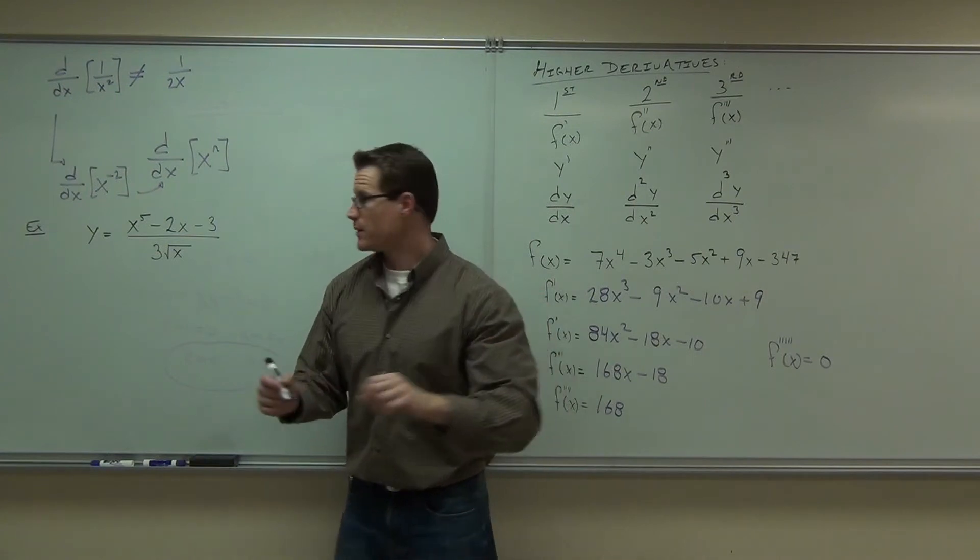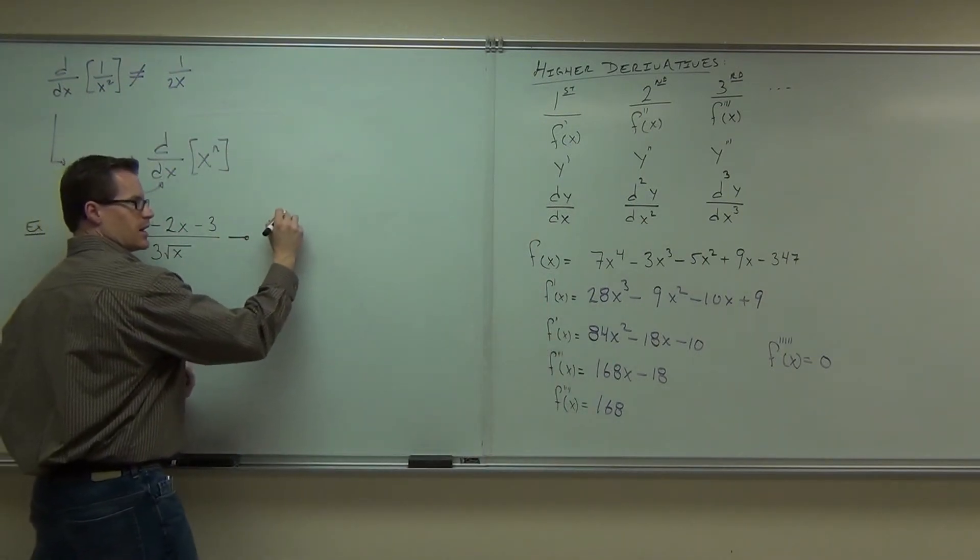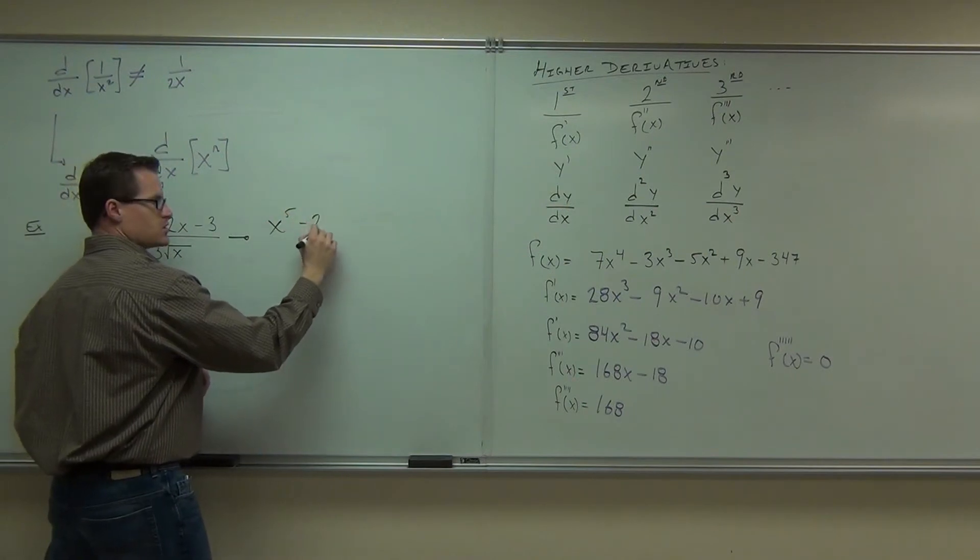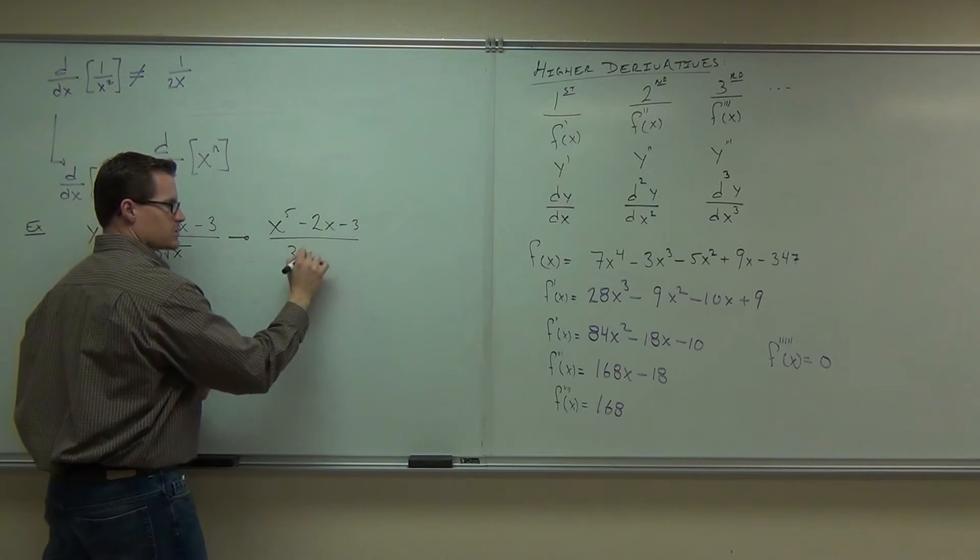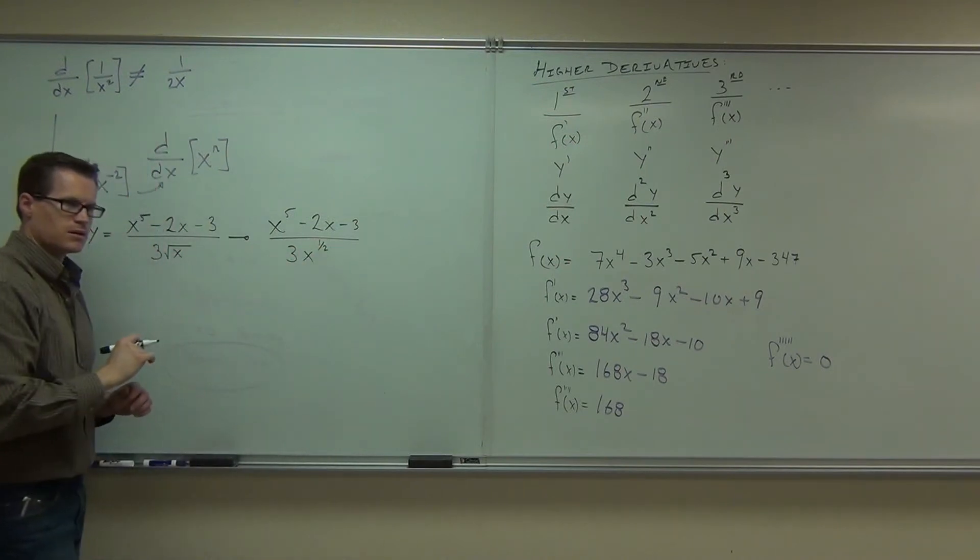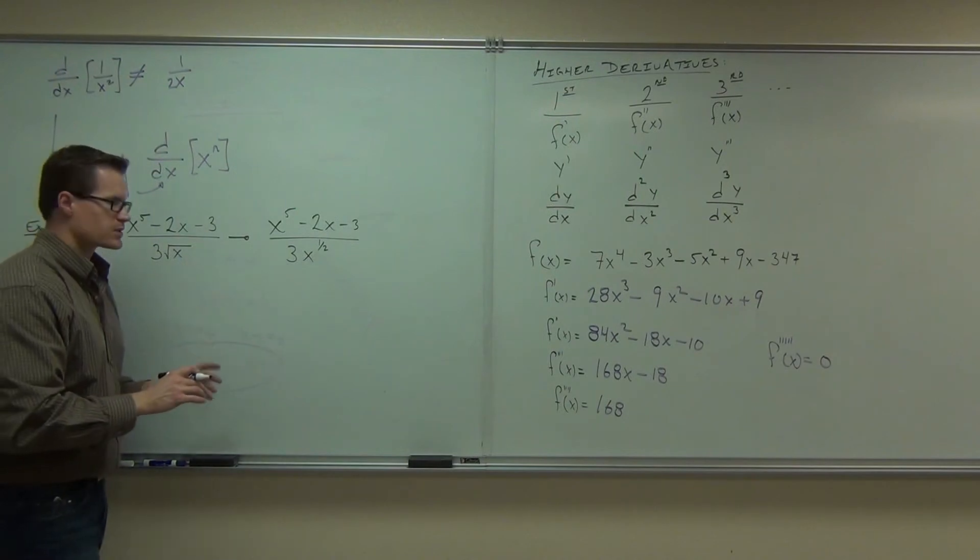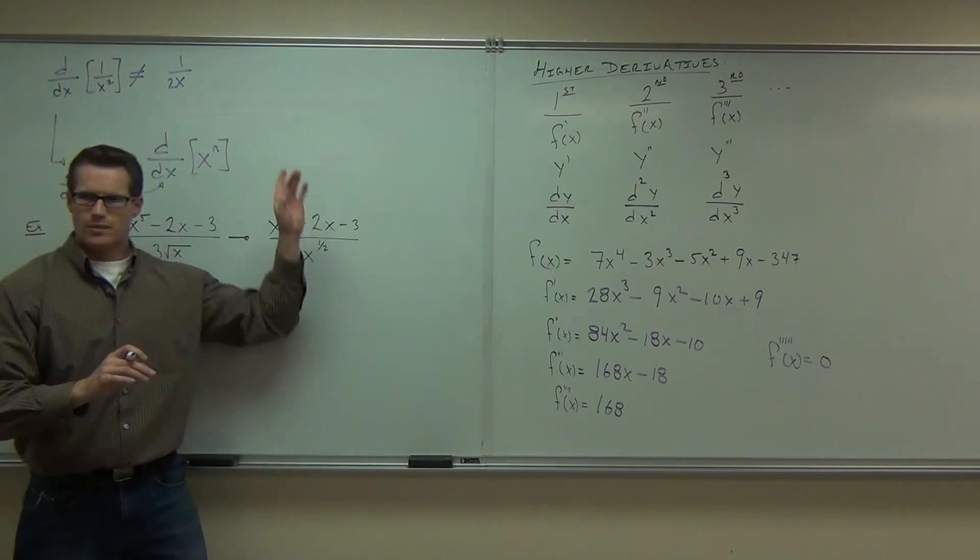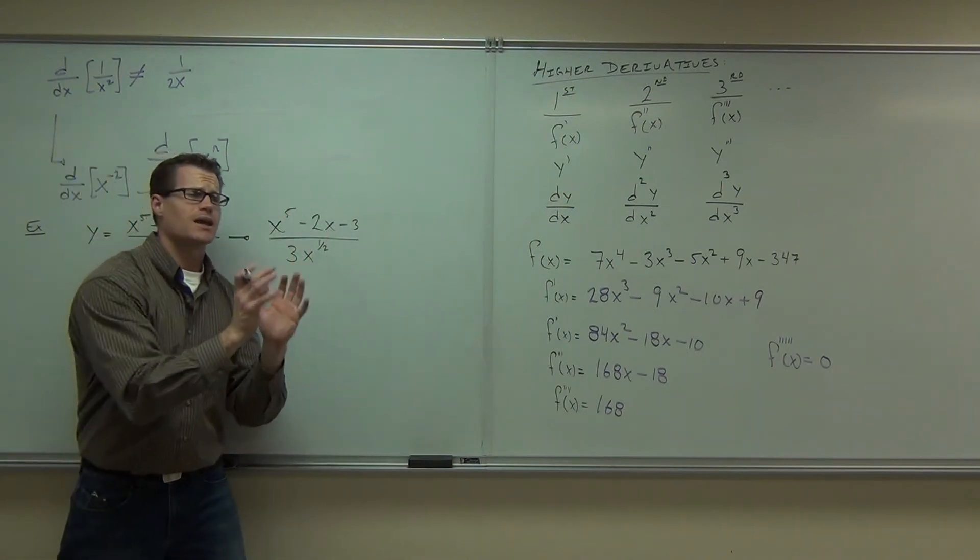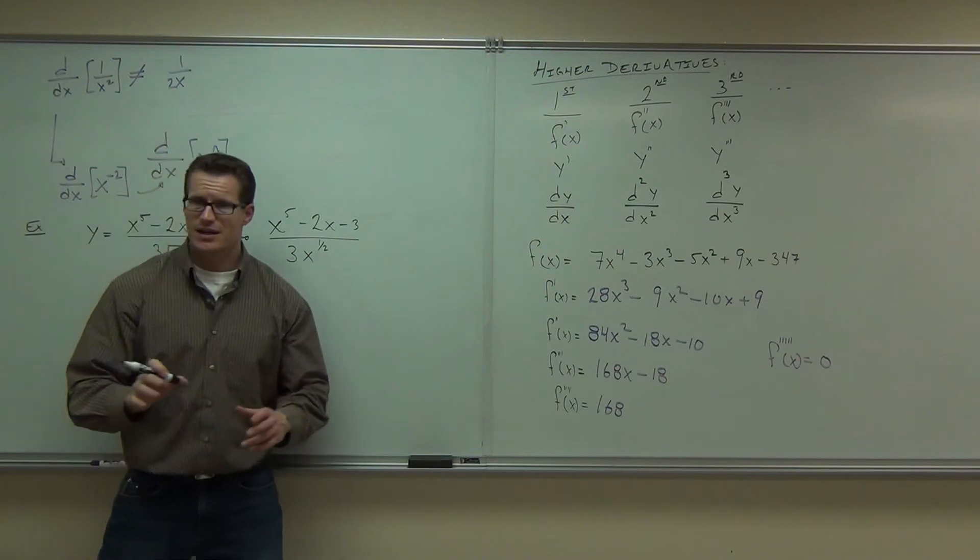Let me show you a couple things about this problem. Number one, well, you probably are going to want to make this x to the fifth minus two x minus three all over three x to the one half. Do you see what we did there? You okay with that? That's okay. That's great. That's fine. But here's what you cannot do. This is going to go back to our previous problem. What you can't do, folks, you can't do this. I wish you could, but you can't.